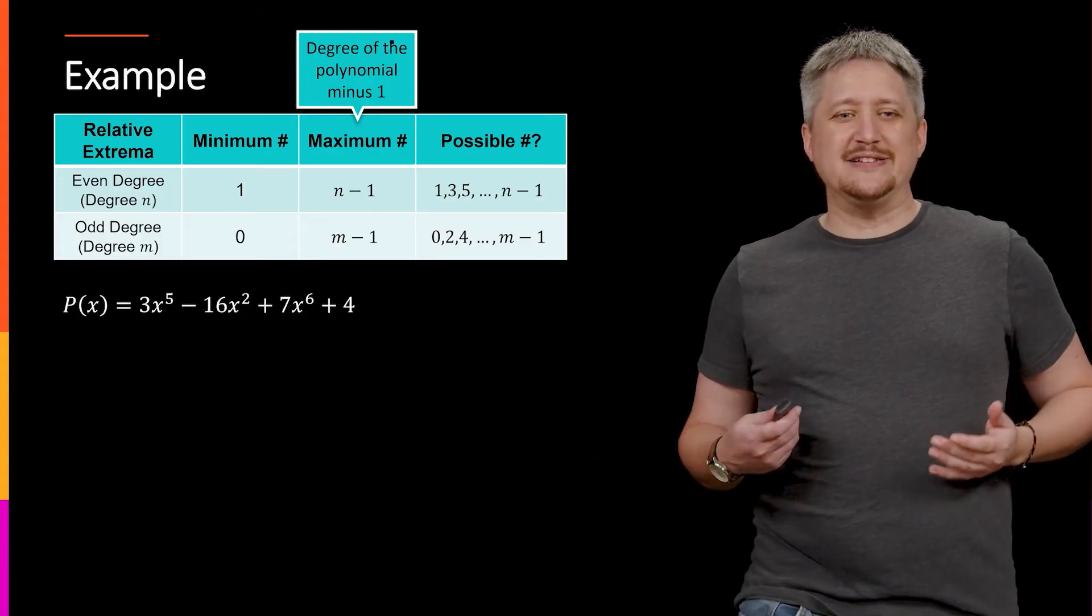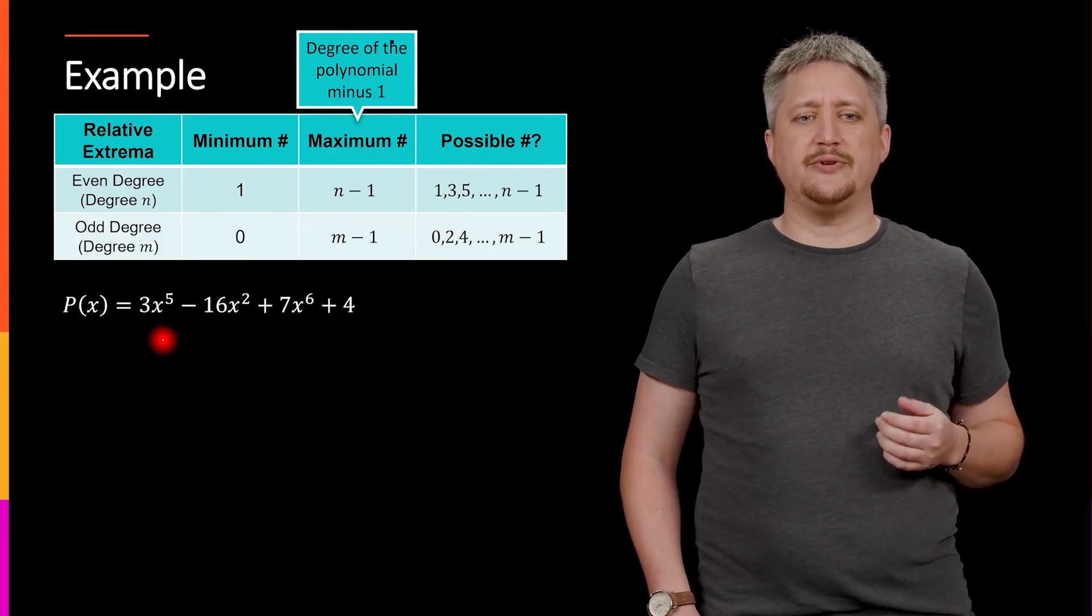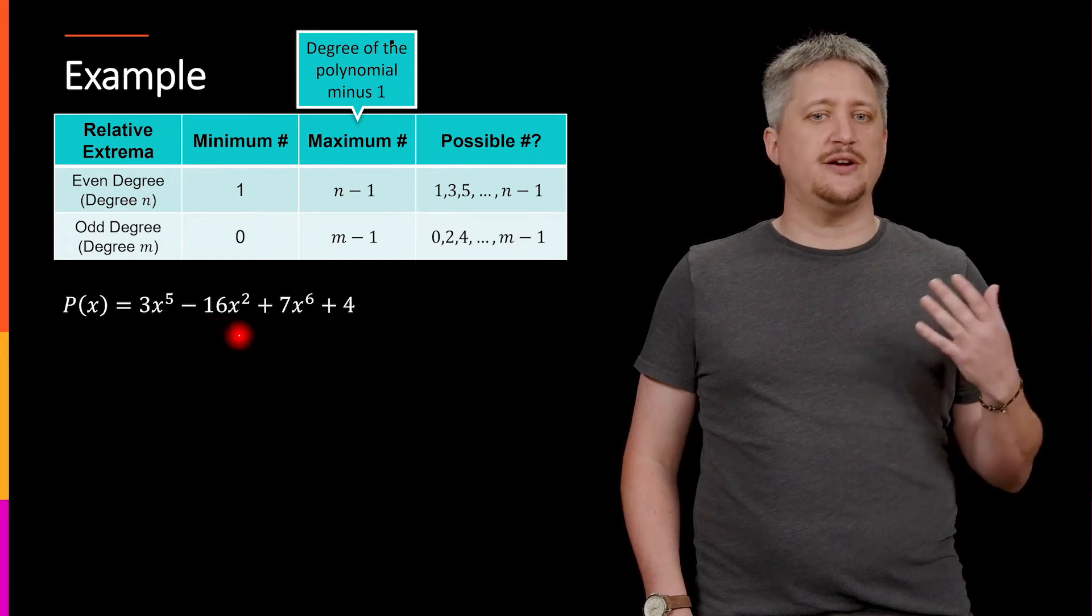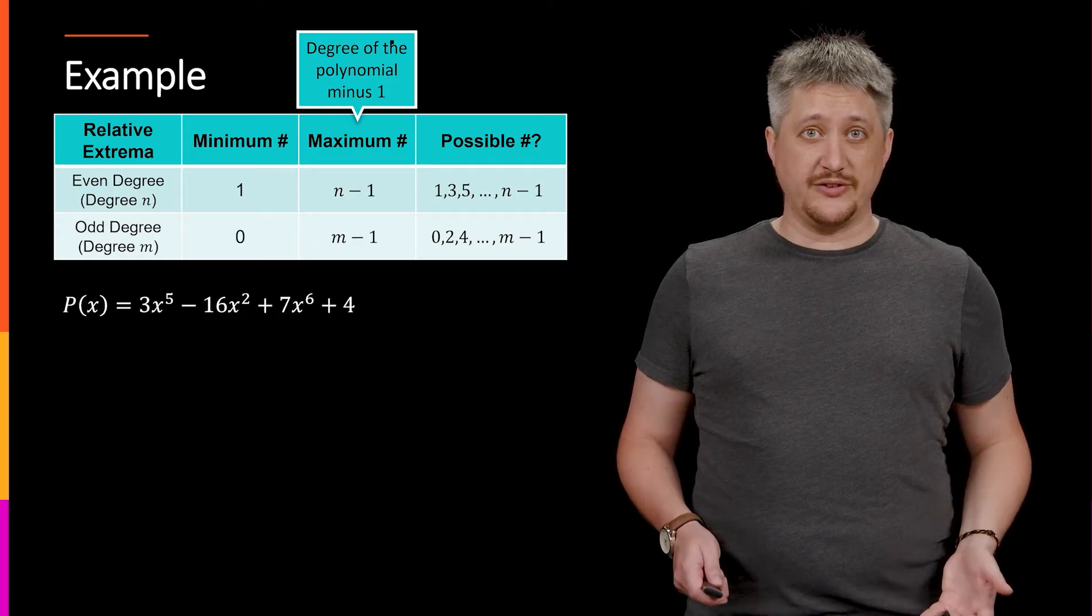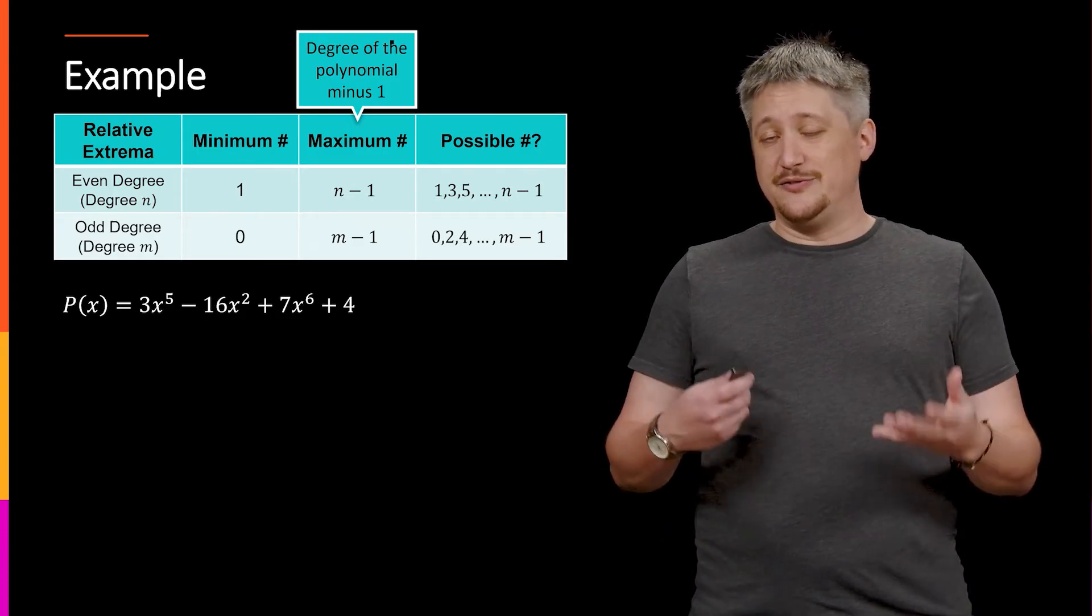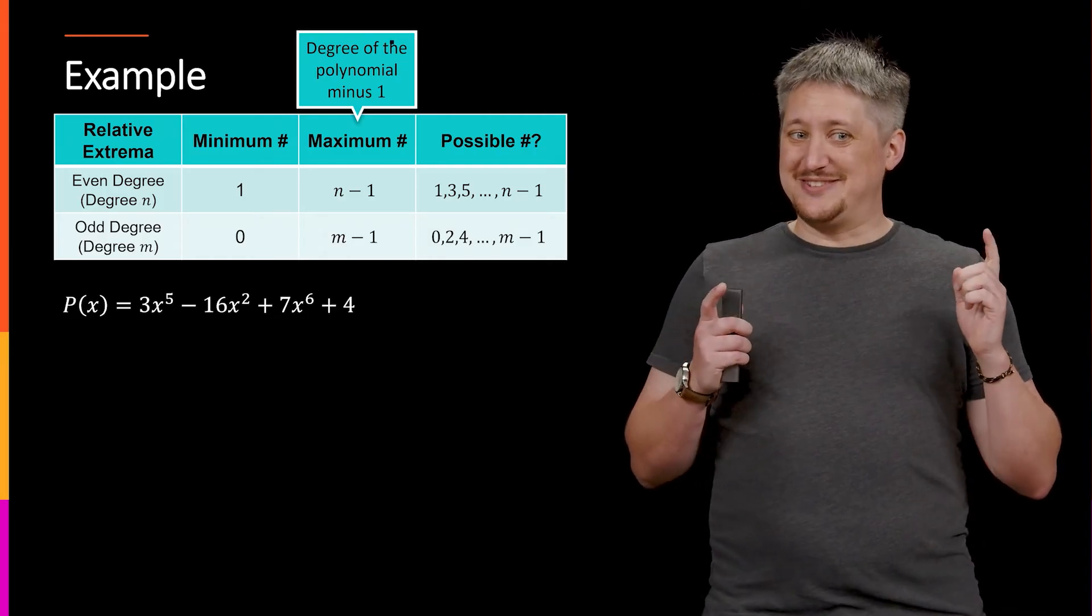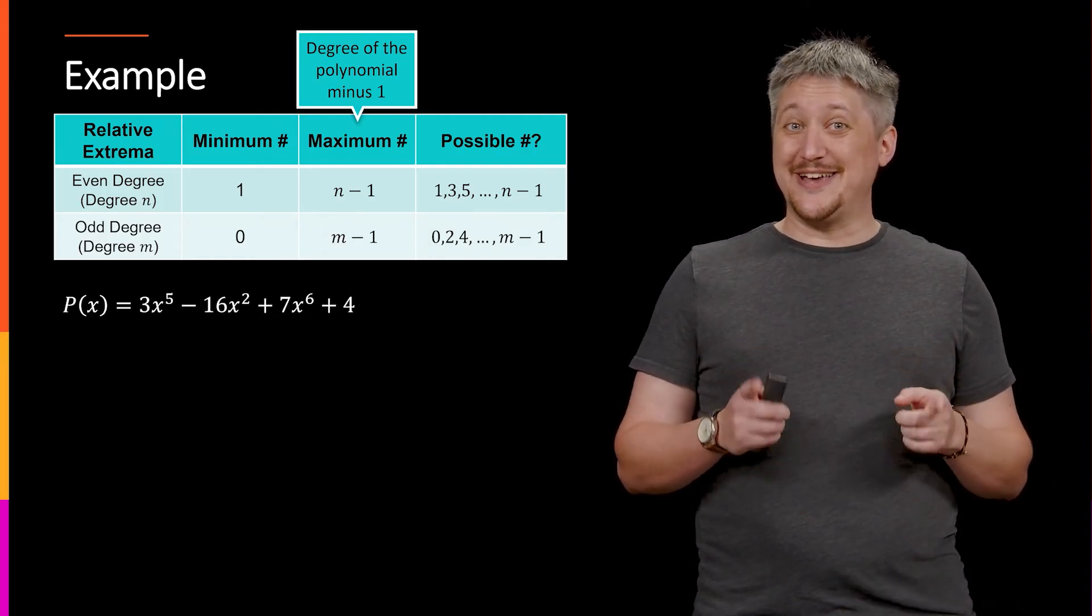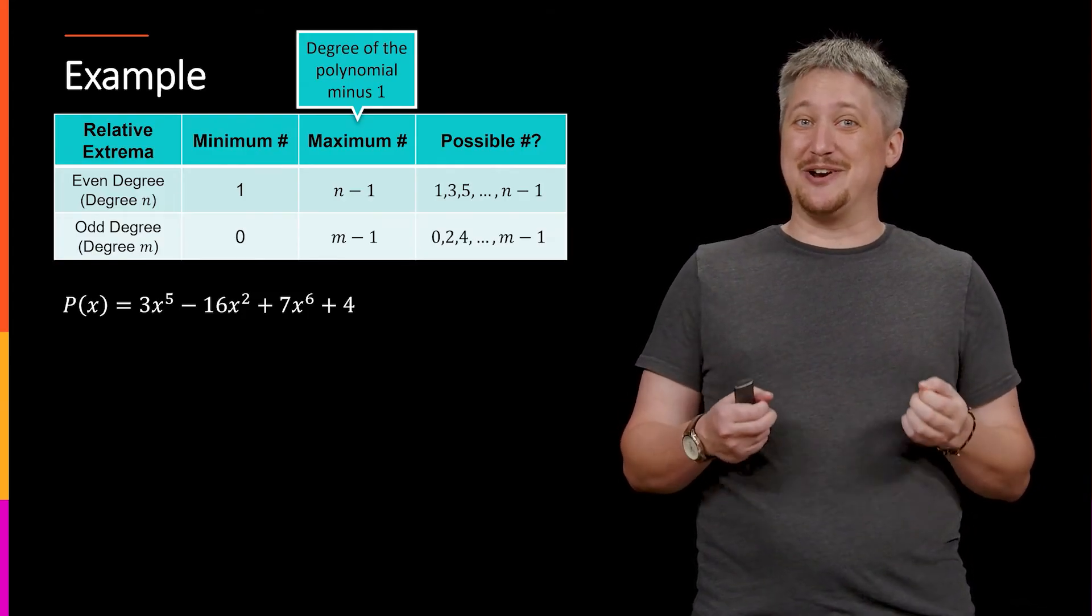So sort of abstract, let's see an example. So let's say we have our polynomial here, 3x to the fifth minus 16x squared plus 7x to the sixth plus four. So the first thing we need to know is what is the degree. So if you look at this, what do you think the leading term is? So if you said 3x to the fifth, be careful, because you can never depend on somebody to give it to you in the right format.